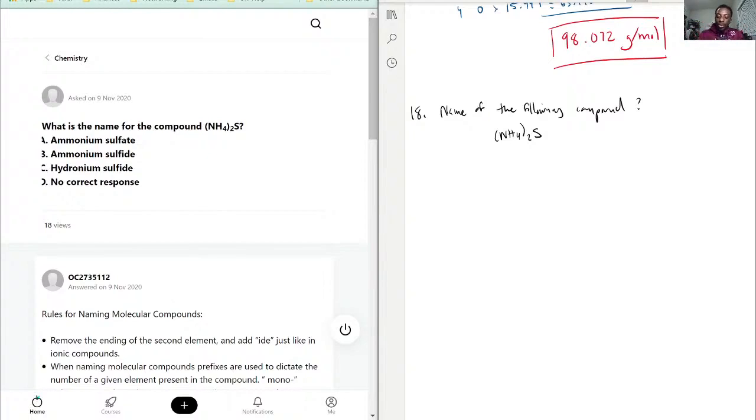This NH4 here, you have to memorize it and recognize it as ammonium. And ammonium doesn't abide by the same rules of what we have, like a covalent compound. We have to indicate the quantity of them.